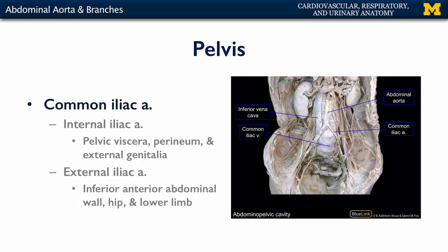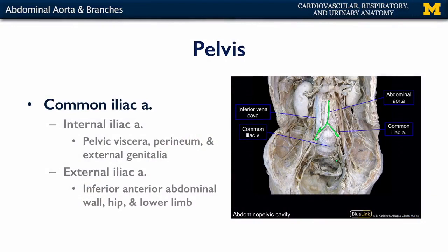The abdominal aorta splits anterior to the vertebral column into the common iliac arteries, which divide into external and internal iliac arteries. The internal iliac arteries, often referred to as the hypogastric arteries, supply the pelvic viscera, the perineum, and the external genitalia with blood. The external iliac arteries provide the blood supply to the lower limb.